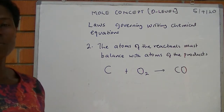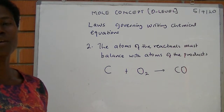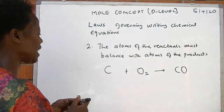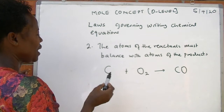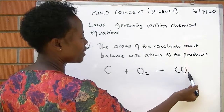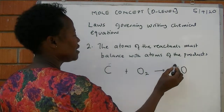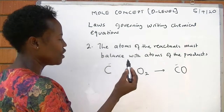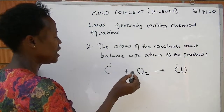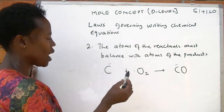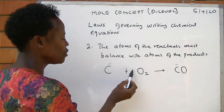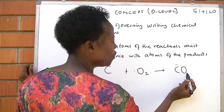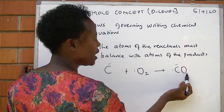Rule number two: when you are balancing an equation, the atoms of the reactants must balance with those of the product. In our example of burning carbon in limited oxygen to give carbon monoxide, the product side has one carbon atom, so these two atoms are balancing. For oxygen, you look at the subscript and the coefficient in front. One times two times one gives two atoms of oxygen on the reactant side.